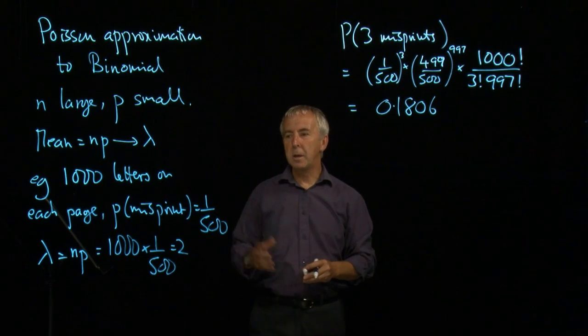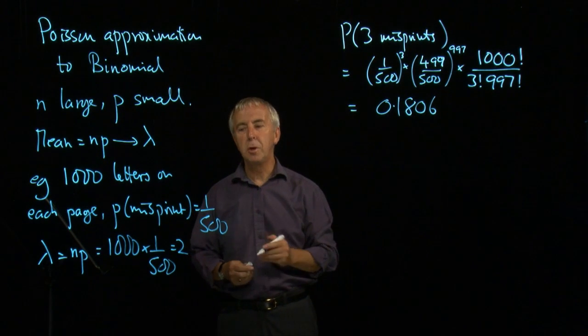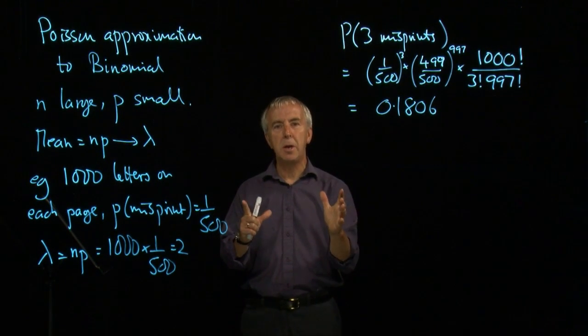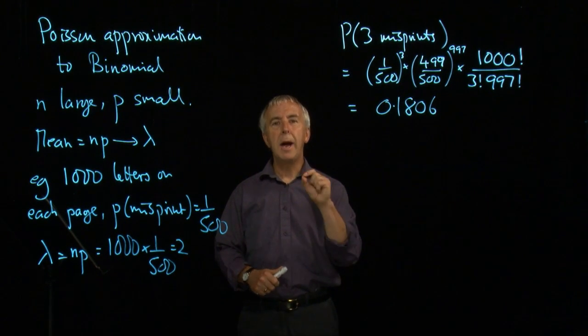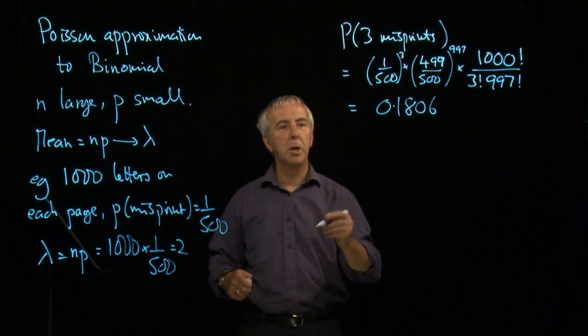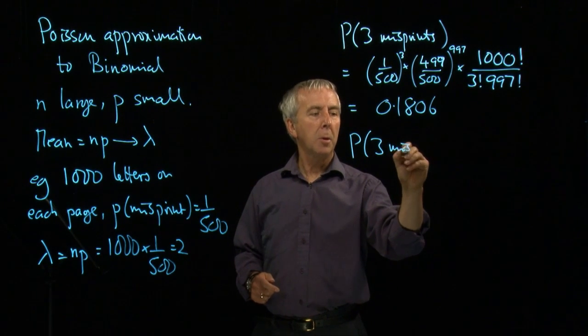Let's instead go for the idea that this is a Poisson process with a mean of 2. So what we're now doing is thinking of each page of 1,000 letters as being one observation and the average number of events of misprints is 2. What's the probability of 3 misprints using the Poisson?